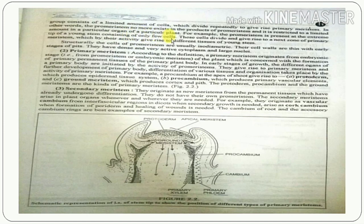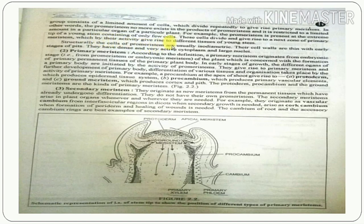For example, pro-meristem is present at the extreme tip of the young stem and consists of only a few cells. These cells divide and give rise to the next zone of primary meristem, which by their activity gives rise to different tissues of the young stem.